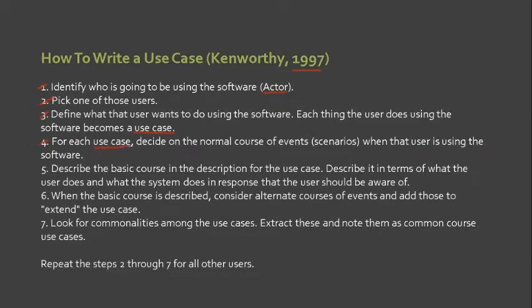For each use case — each feature or function — decide on a normal course of events or scenarios when the user is using the software. Fifth, describe the basic course and description for the use case: describe it in terms of what the user does and what the system does in response that the user should be aware of. Sixth, with the basic course described, consider alternate courses and events and add those to extend the use case.